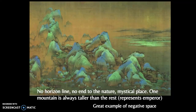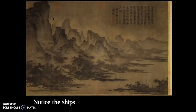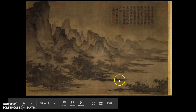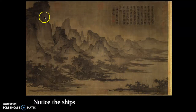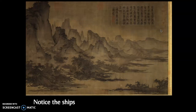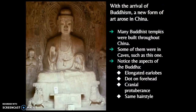These are quite beautiful. Look at this one — we see ships, a taller mountain, and the negative space. What's the relationship between human beings and nature? What do you think these landscape paintings are trying to tell us?